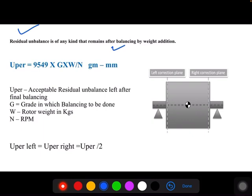The formula used for the residual unbalance as per the standard 1940 is: U_per = 9549 × G × W / N. U_per means acceptable residual unbalance left after final balancing. This is the formula to calculate the residual unbalance for different quality grades.